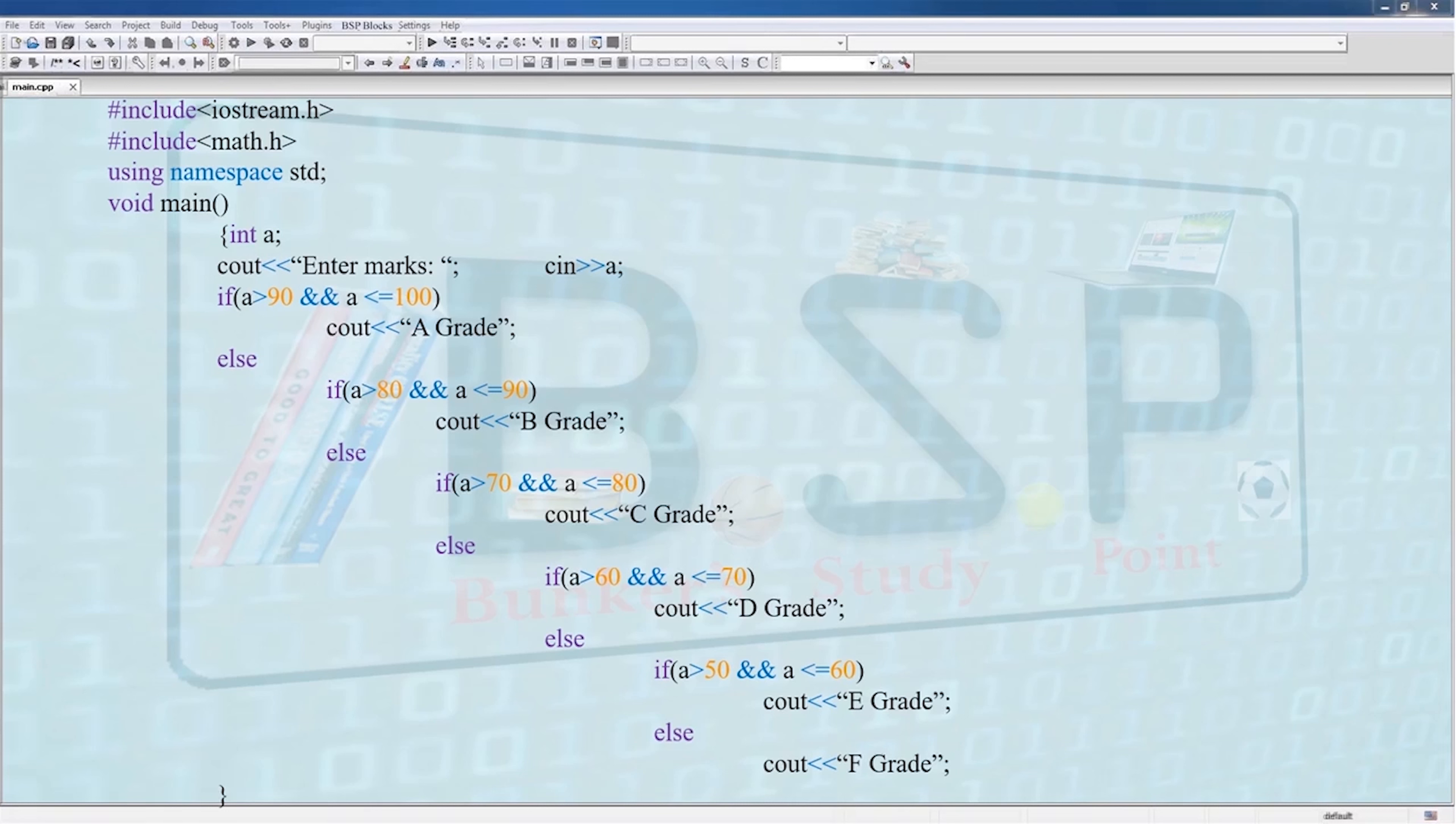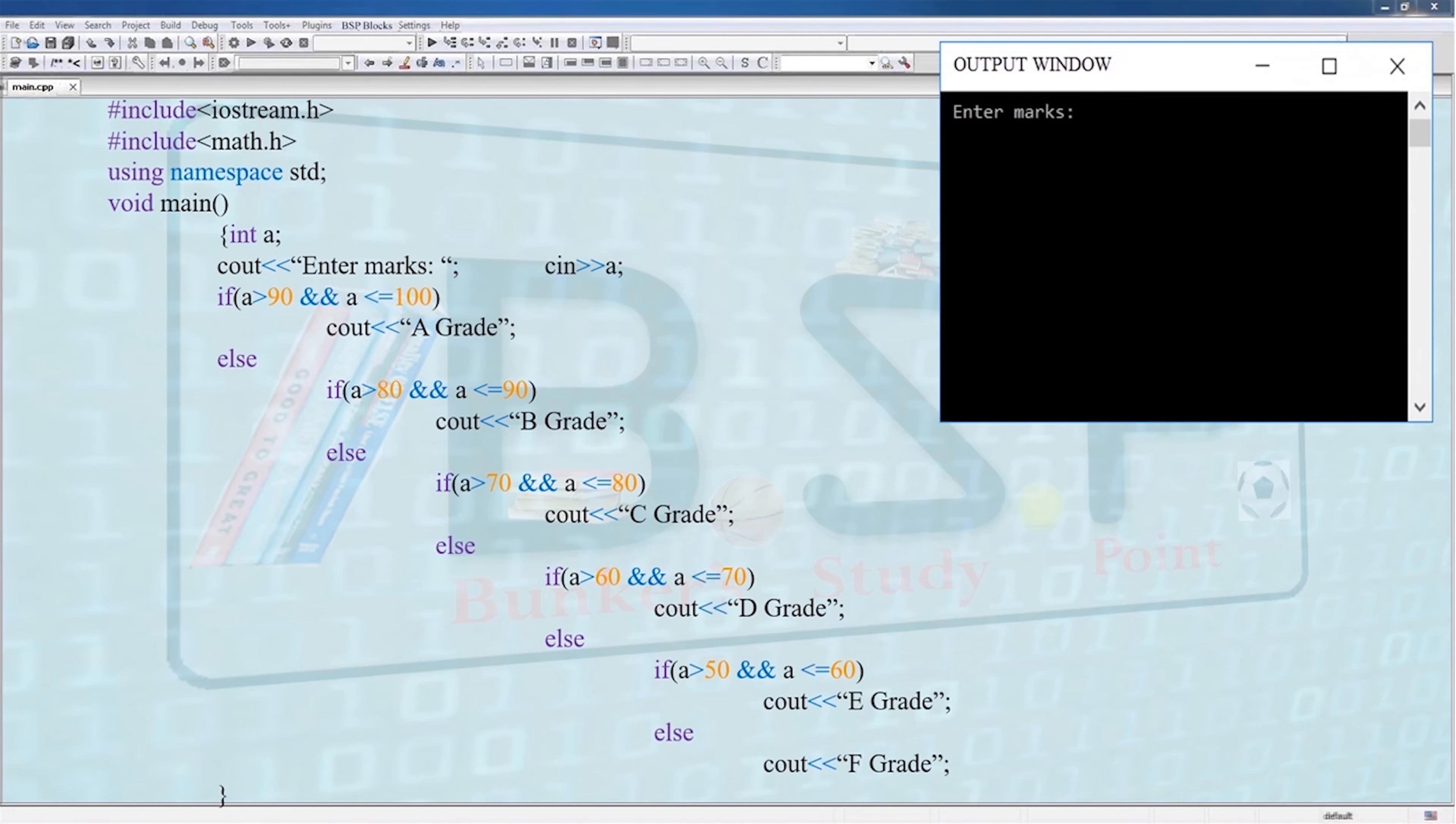Point to notice: we have used only greater than sign on the left condition, not including the lower limit value, but we are including the higher limit value where we have used less than or equal to. Let's compile this program. First, enter marks. Suppose we enter 66, the program gets the output D grade.